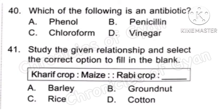Question 41: Study the given relationship and select the correct option to fill in the blank. Kharif crop is to maize as Rabi crop is to what? The correct answer is Option A, Barley. Rabi crops are grown in the winter season and Kharif crops are mainly grown in the monsoon season.